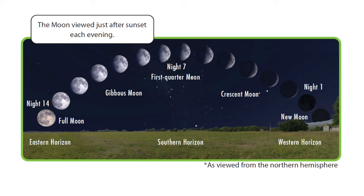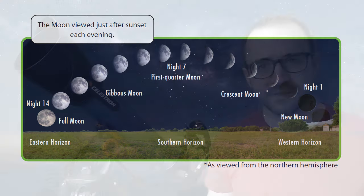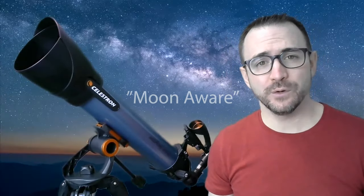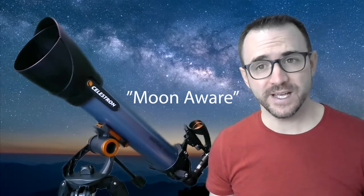Starting with the crescent phase through the first quarter about four days later, followed about seven days later by the full moon. Amateur astronomers become what we call moon aware. This means that you always know the current lunar phase, where the moon is in the sky, and what that means for you as a stargazer.